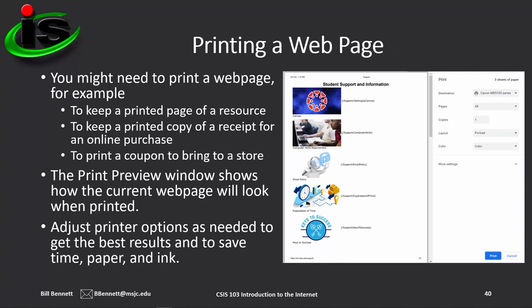There may come a point when you want to print a web page — to keep a printed record of a resource, a copy of a receipt for an online purchase, or to print a coupon to bring to a store. You can use Control-P or right-click in the blank area of a web page to access the Print option. The Print Preview window will show how the current page will look when printed, and you'll have options for which printer to use, which pages to print, how many copies, portrait or landscape layout, and whether you want color or not.